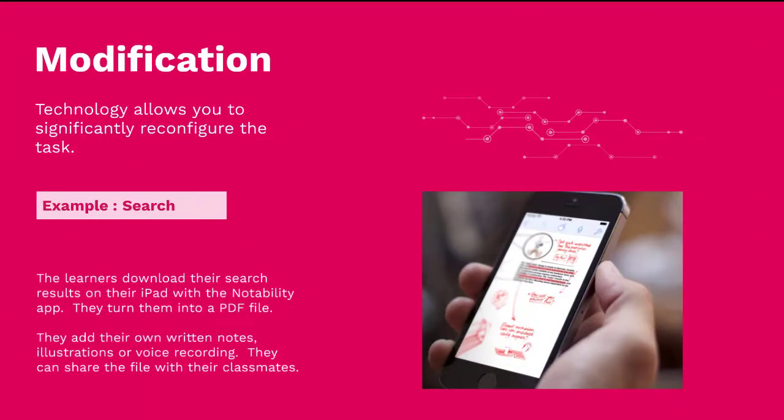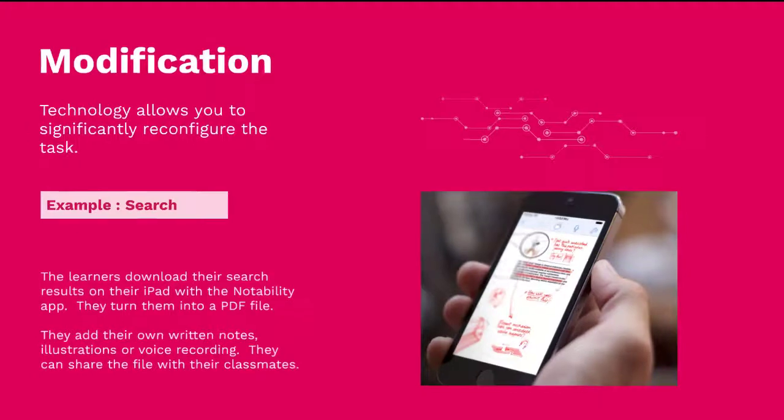Then there is a further step: modification, which allows you to significantly reconfigure the task. For instance, learners download their search results on their iPad with the Notability app, turn the downloaded web page into a PDF, write notes on it, add text, add sounds, and share it with their classmates — something you couldn't have done without a digital tool.